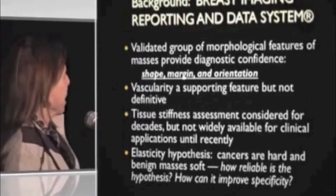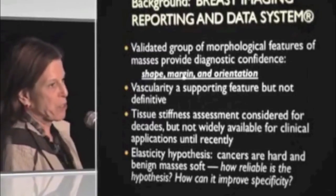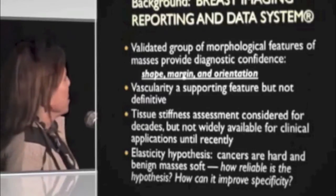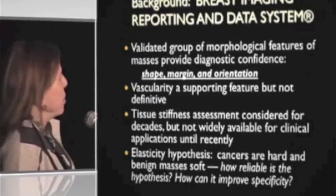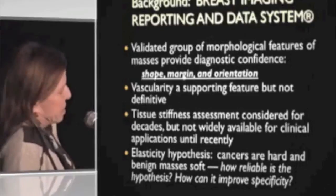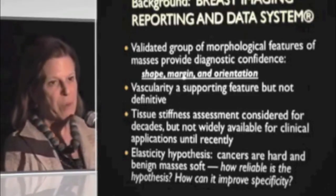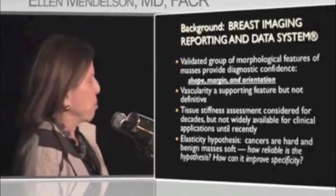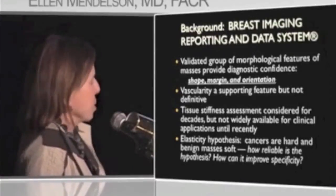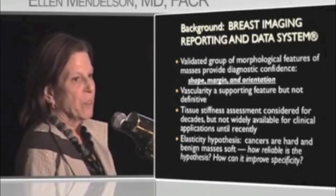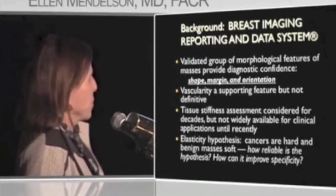It is an acronym and a registered trademark of the American College of Radiology. What it includes is a validated group of morphologic features of masses that, in application, will provide diagnostic confidence in the three most important morphologic features taken together: shape, margin, and orientation. We looked at vascularity as another feature and found it supportive, but not definitive.